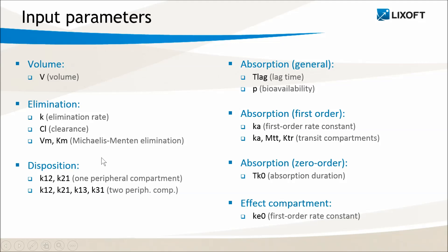For the disposition, I can define a peripheral compartment using k12, k21, or two peripheral compartments by using in addition k13, k31. Note that here only rate constants are recognized as keywords, but I will show you afterwards how to nevertheless use intercompartmental clearances.